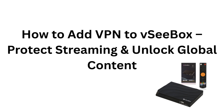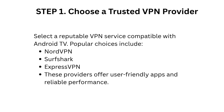How to add a VPN to VCBox to protect streaming and unlock global content. Step 1: Choose a trusted VPN provider. Select a reputable VPN service compatible with Android TV. Popular choices include NordVPN, Surfshark, and ExpressVPN. These providers offer user-friendly apps and reliable performance.